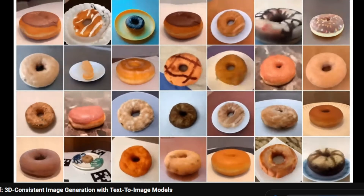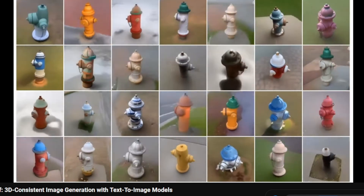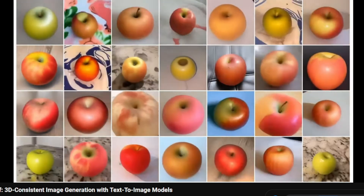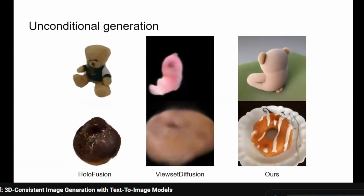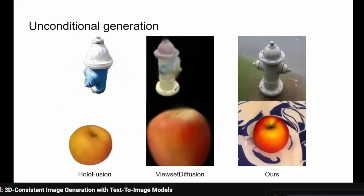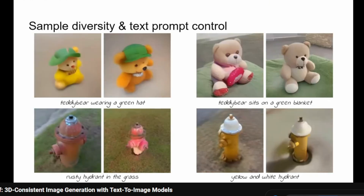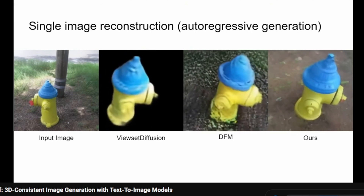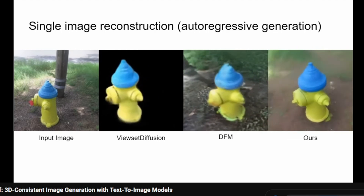Now let's talk performance. ViewDiff doesn't just promise high-quality images — it delivers. According to the researchers, ViewDiff outperforms existing methods with significant improvements in visual quality. In terms of FID (Fréchet Inception Distance), ViewDiff achieves a 30% reduction compared to other state-of-the-art models — lower FID scores indicate better image quality and realism. There's also a 37% reduction in KID (Kernel Inception Distance), which further confirms the superior quality of images generated by ViewDiff. ViewDiff is pushing the boundaries of what's possible with 3D image generation by leveraging pre-trained text-to-image models and integrating advanced 3D-aware techniques, setting a new standard for quality and consistency.